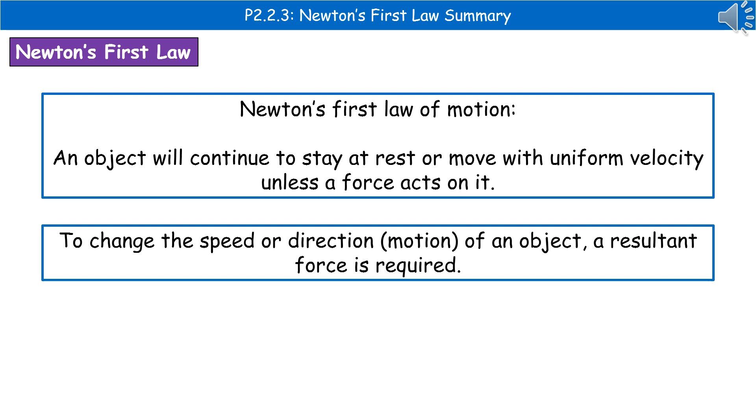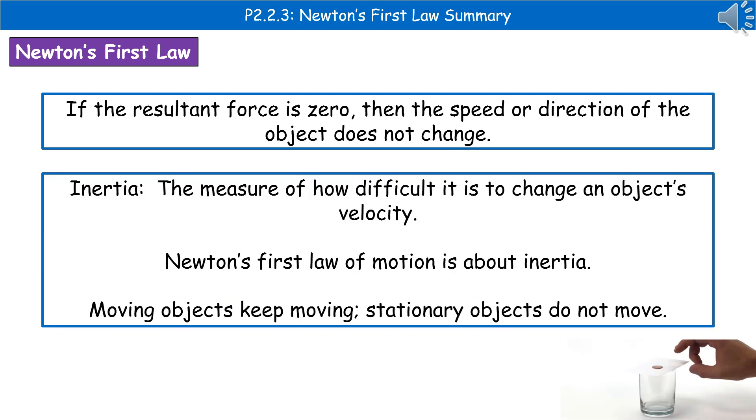So in order to change speed or the direction of an object, we need a resultant force. If the resultant force was zero, then the speed or direction of the object won't change.